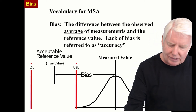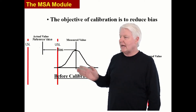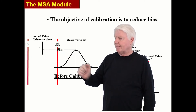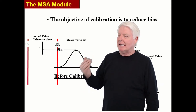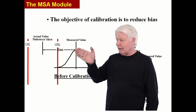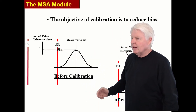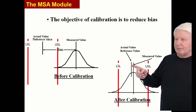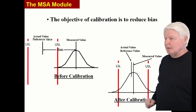Now let's review something here. Here it is before calibration — because that's how we reduce bias: through calibration. Here's our accepted reference value, and notice we're outside of the spec limits. Therefore this instrument is not acceptable; it's not calibrated. We need to reduce this bias by adjusting the measurement instrument until it's closer to the true value. After calibration, there's the measured value and the accepted reference value, and now it's within the specs. Therefore, this is acceptable — it is a calibrated instrument.